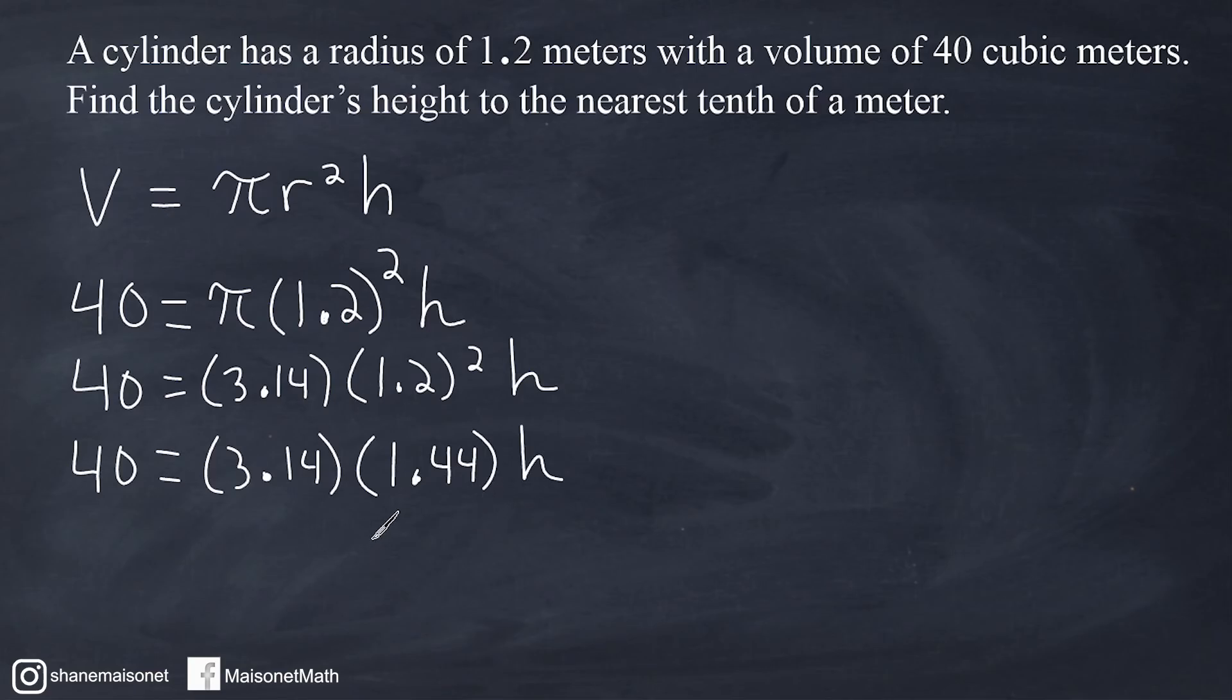The next thing we're going to do is multiply 3.14 times 1.44, which equals 4.5216. We still have to multiply this by the height, and we still have a volume of 40. So we're looking for a height that when multiplied by 4.5216 would equal 40. They want us to round to the nearest tenth of a meter.